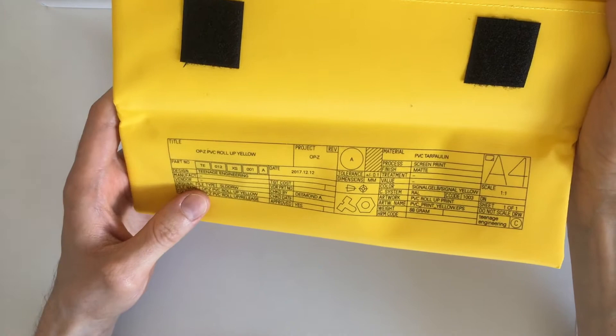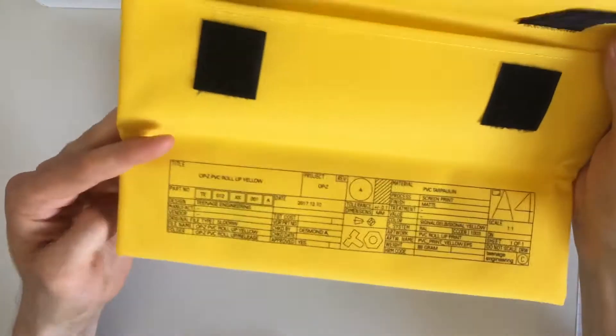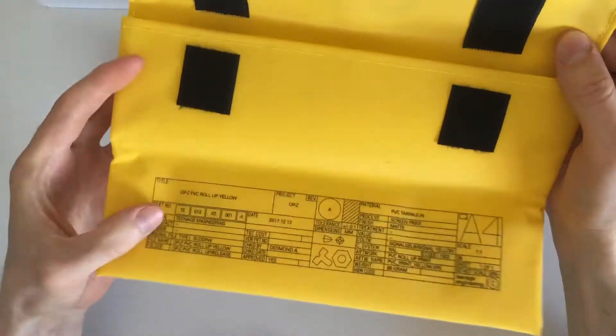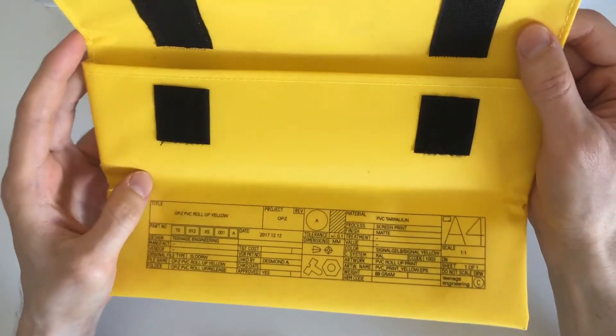There's not that much you can do to decorate a PVC plastic case like this, so that's at least something to look at if you're bored. So why does this roll up and have all this velcro?